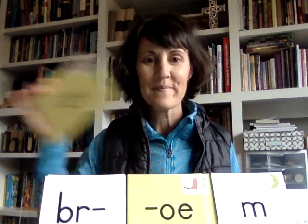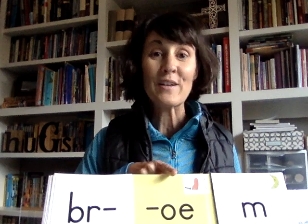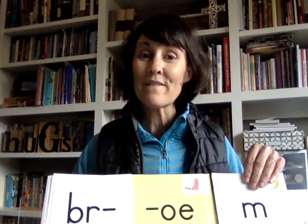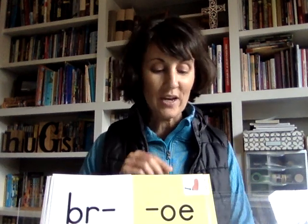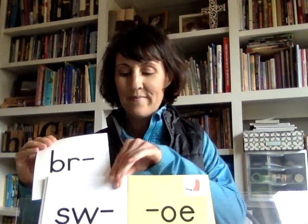Sane. Brain. That's an O-E. That vowel team comes at the end of the word, so I've got to take away my ending consonants. Bro.